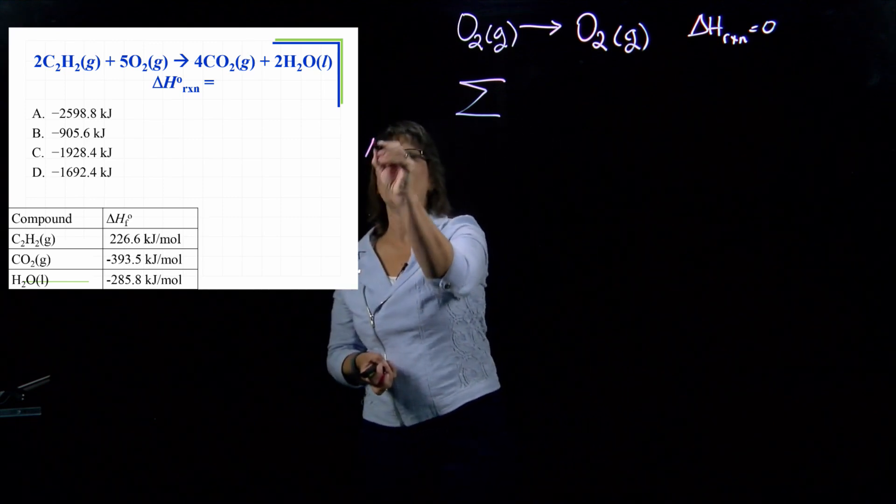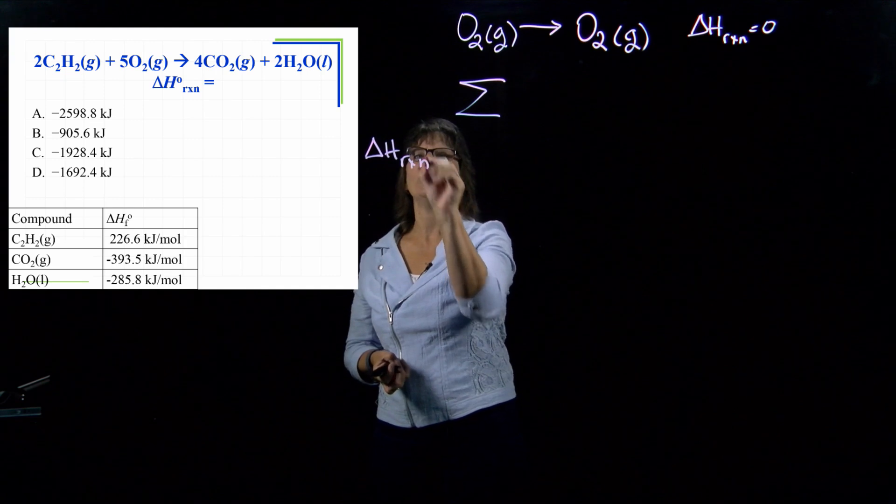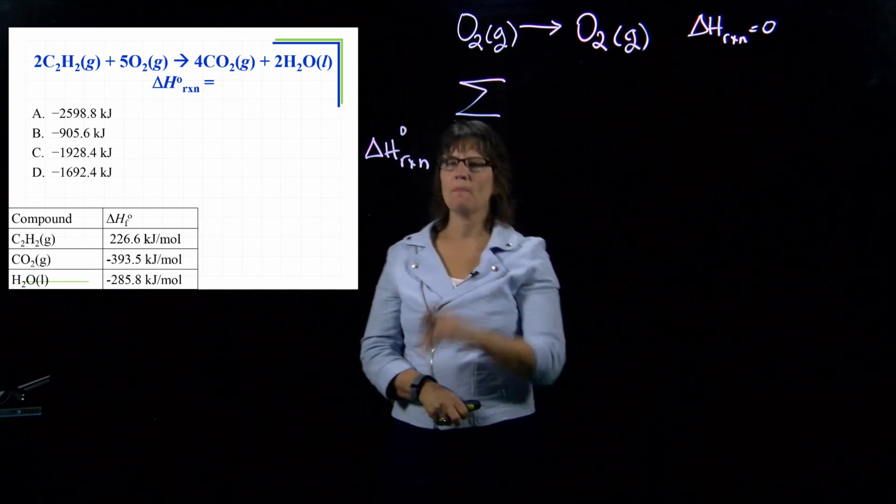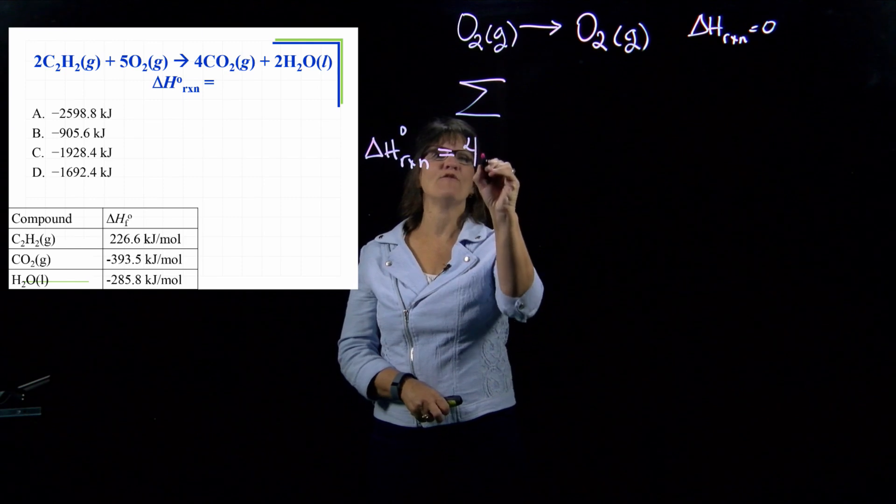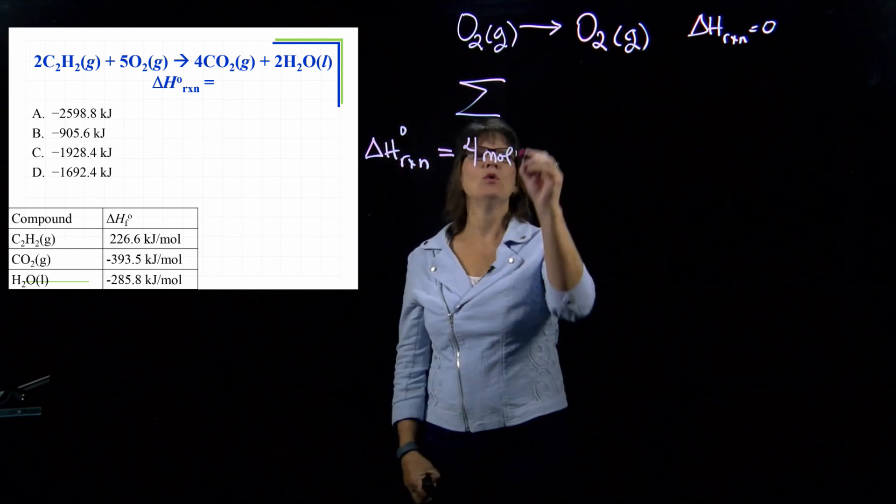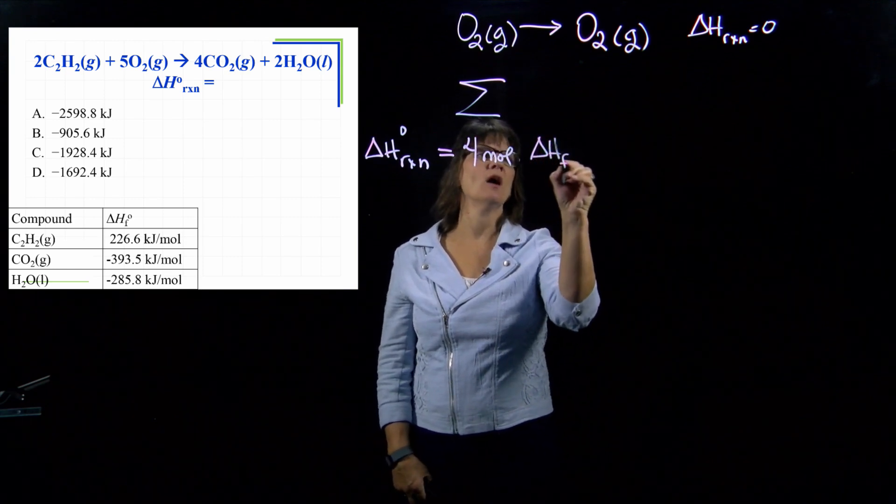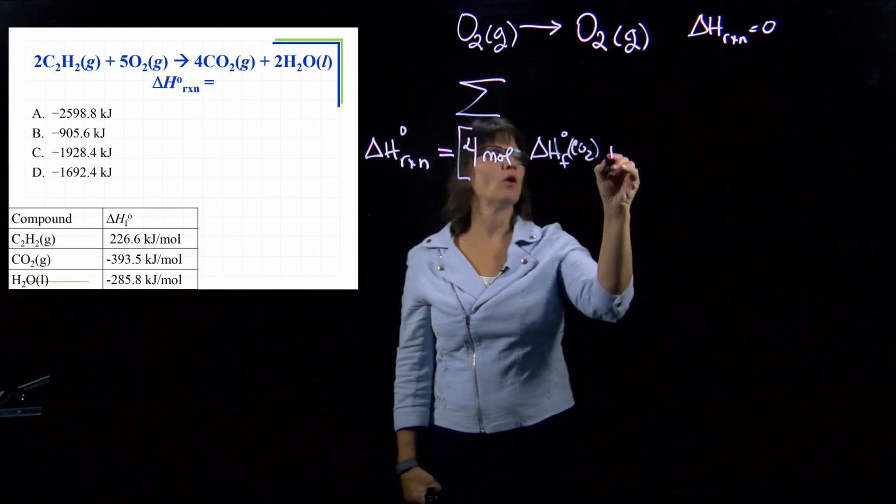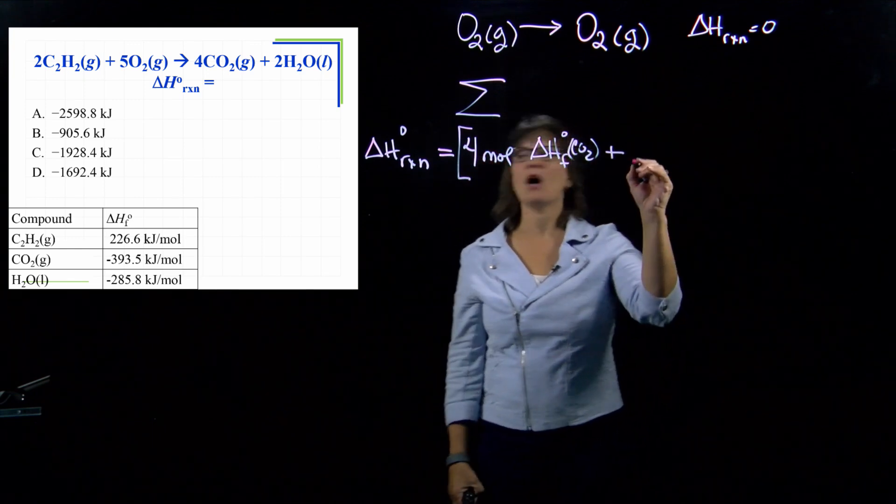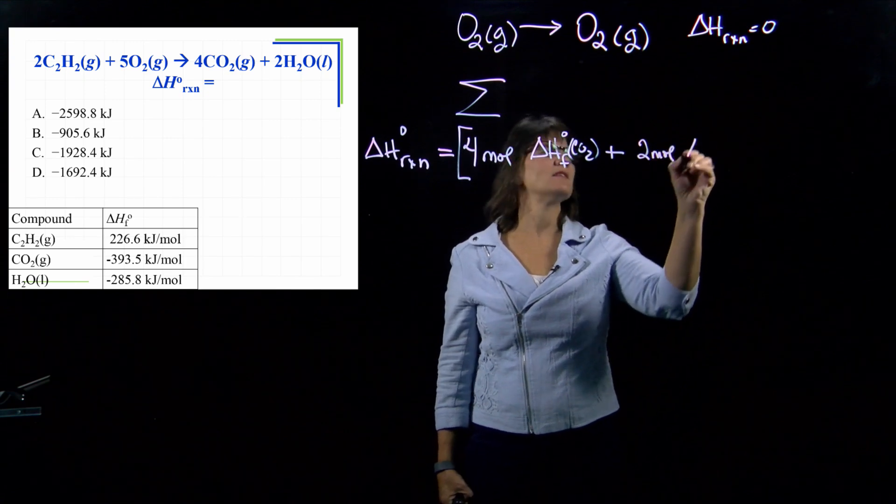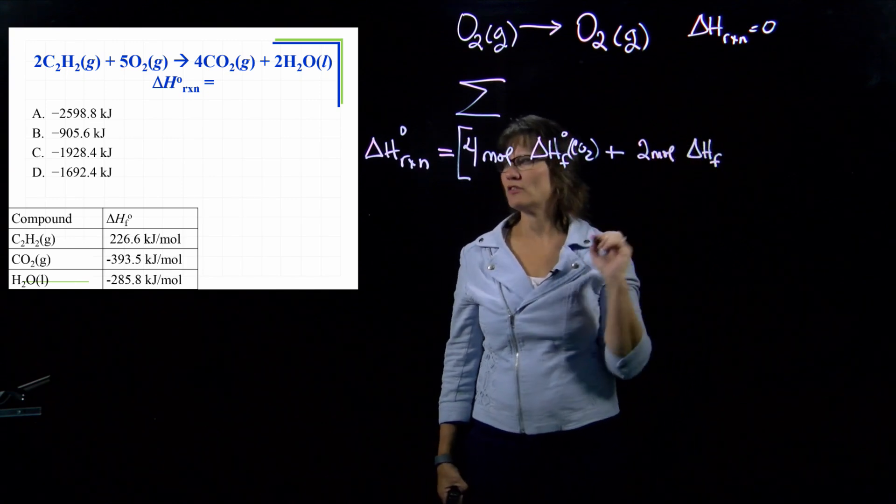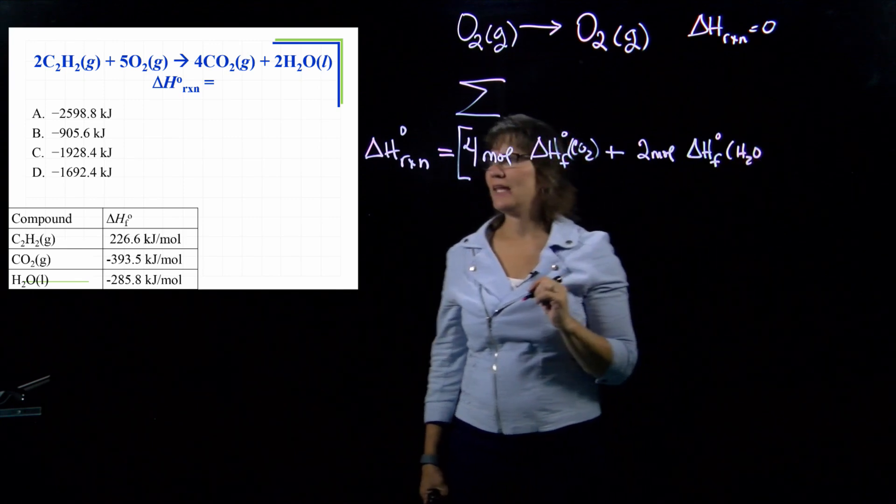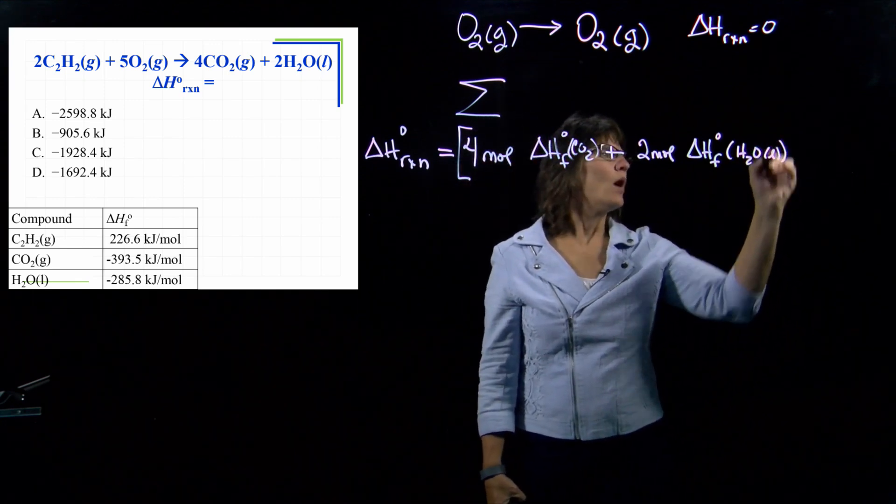And if we're using tables of standard heats of formation, then we're going to end up with a standard delta H for this reaction. We look at the product side, and we see that we have four moles of the CO2. And then we're going to need to have the delta H of formation of CO2. That's the first product. We are adding these up. So then we're going to add to that the delta H of formation of the oxygen, but we have two moles of that oxygen times the delta H of formation. I'm sorry, it's not oxygen. It's water. The delta H of formation of the H2O, and it is a liquid in this case.